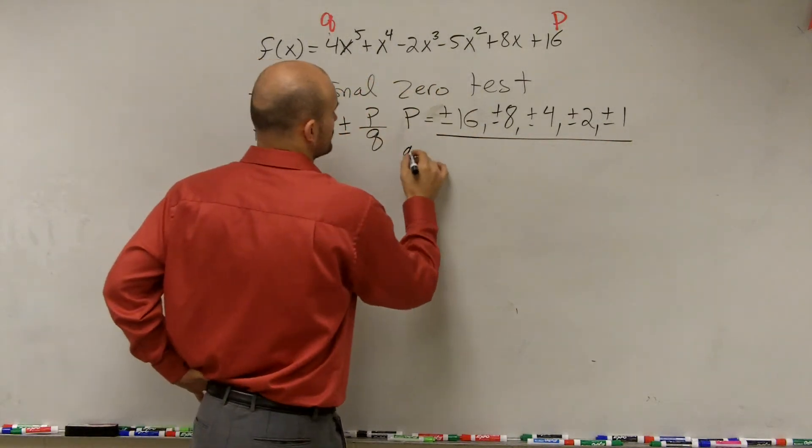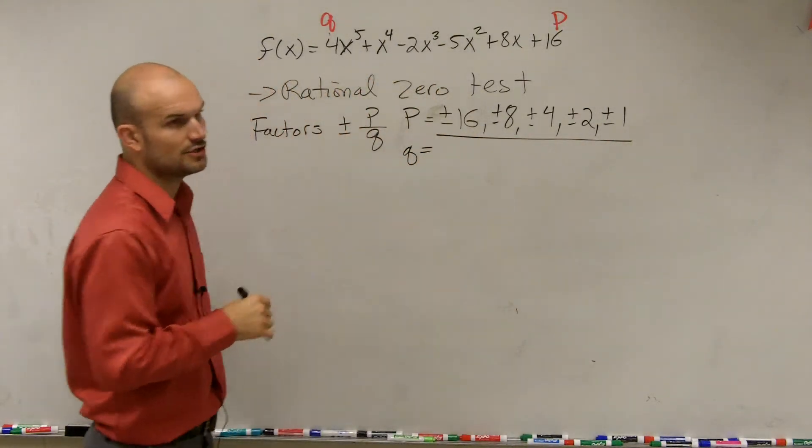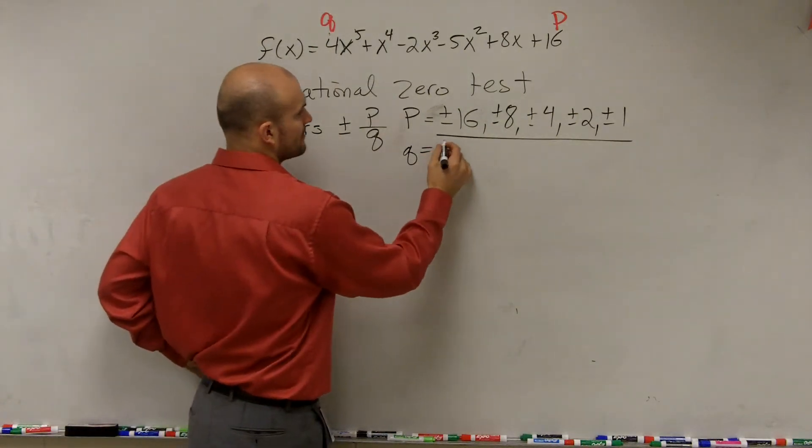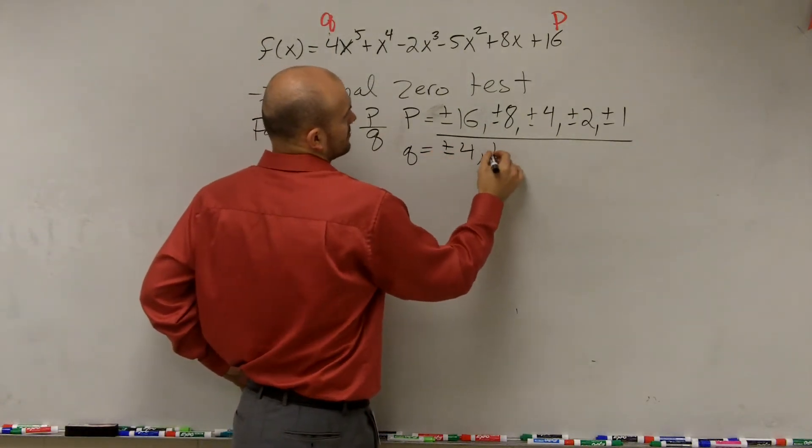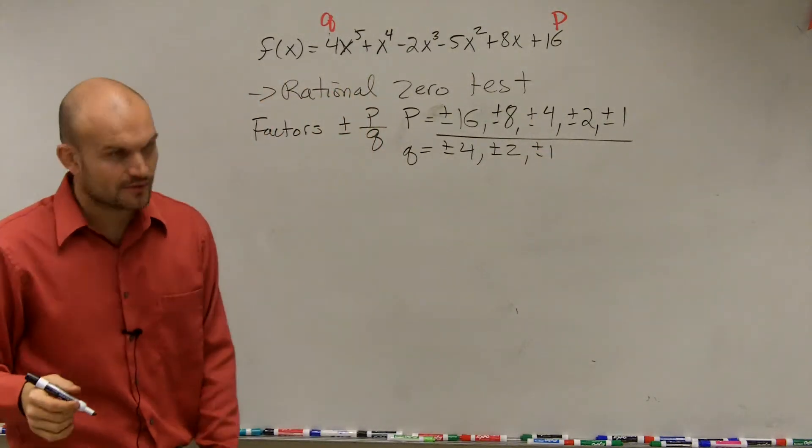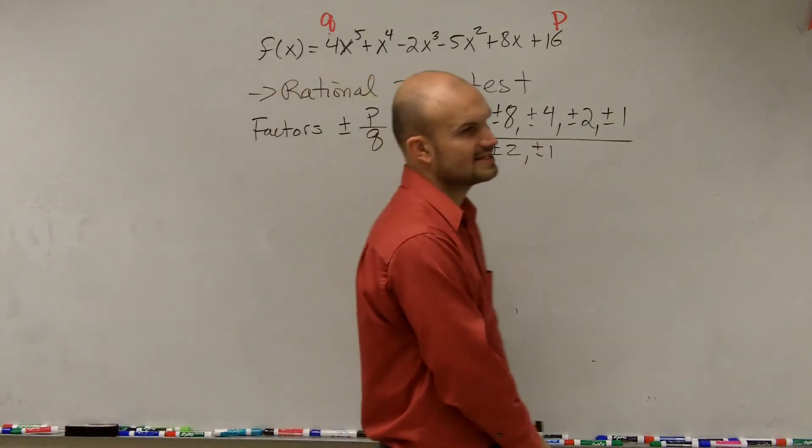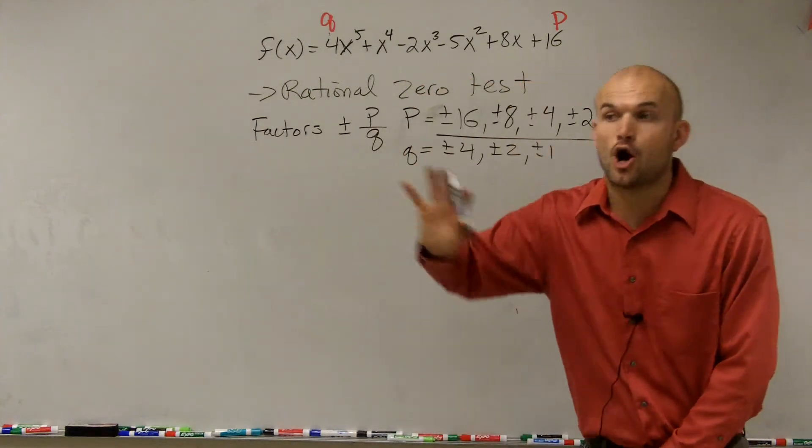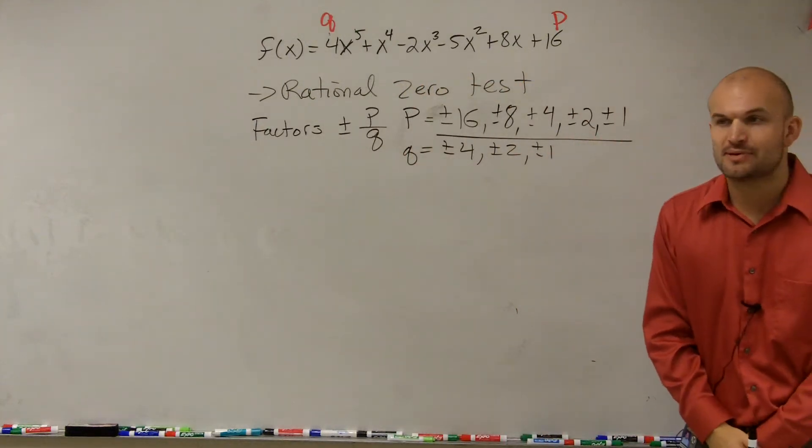Then we're going to do q. So let's do all the factors of q. Well, this one's not as bad: plus or minus 4, plus or minus 2, plus or minus 1.